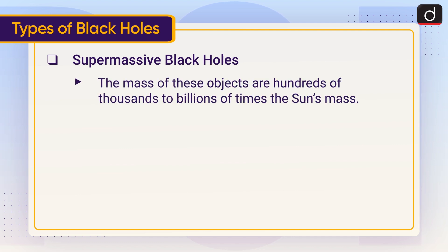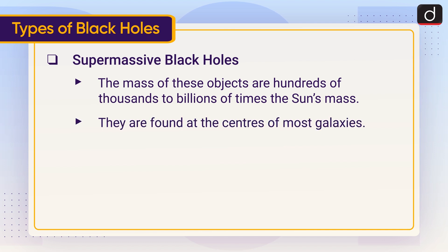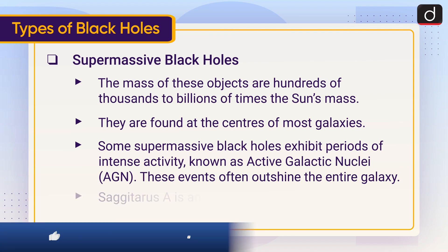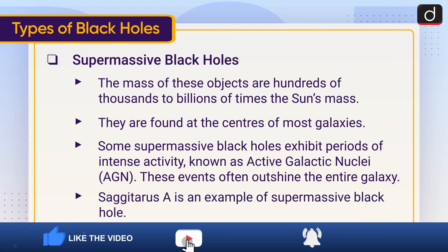Supermassive black holes have masses of hundreds of thousands to billions of times the sun's mass. They are found at the centers of most galaxies. Some supermassive black holes exhibit periods of intense activity known as Active Galactic Nuclei, or AGN. These events often outshine the entire galaxy. Sagittarius A* is an example of a supermassive black hole.